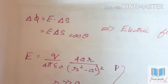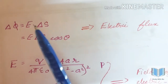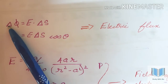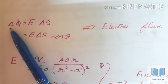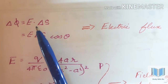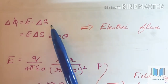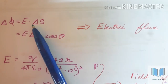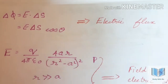Next, Electric Flux is the formula. Electric flux is equal to E dot delta S. We denote the difference here. If you add the dot product, it represents the flux through a surface element.